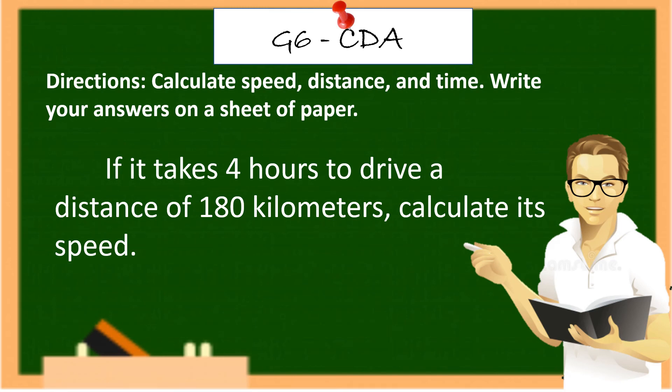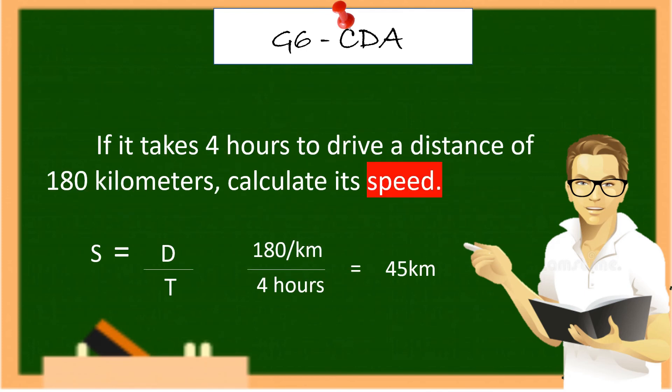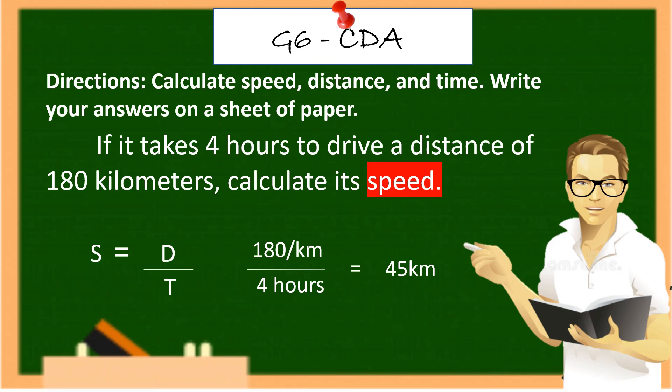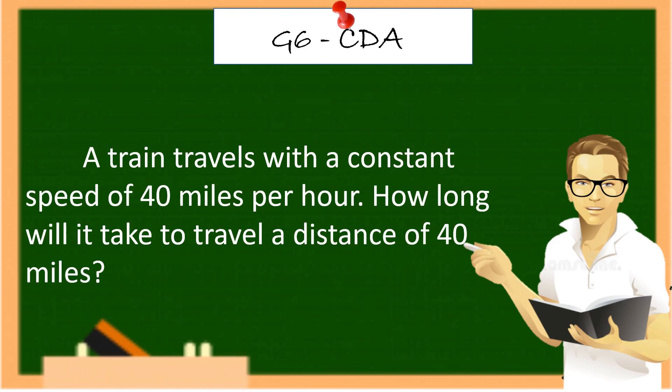Directions: Calculate speed, distance, and time. Write your answer on a sheet of paper. If it takes 4 hours to drive a distance of 180 kilometers, calculate its speed. So S equals D over T, or 180 kilometers the distance, divided by 4 hours of time, so that it equals 45 kilometers per hour.